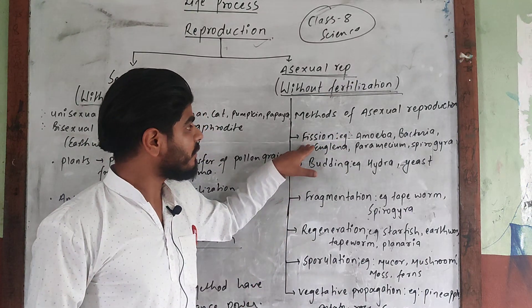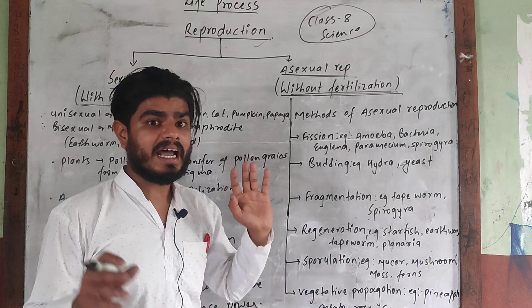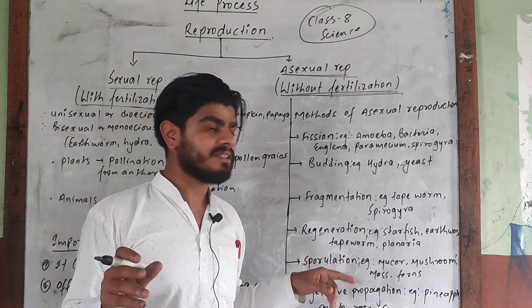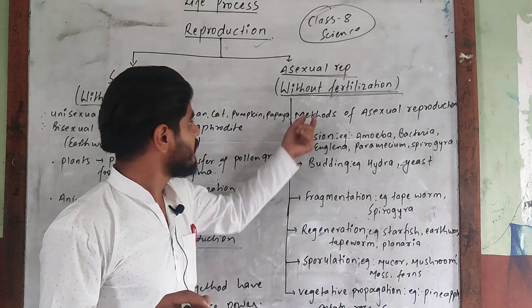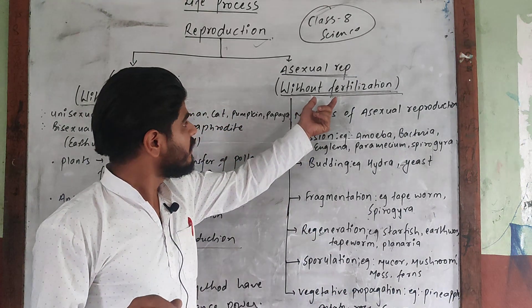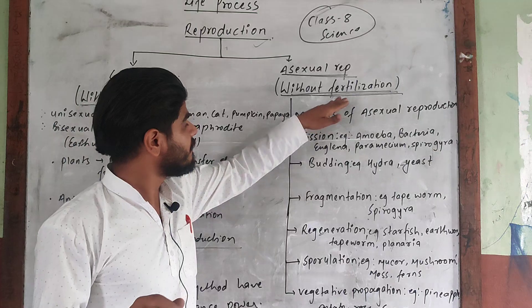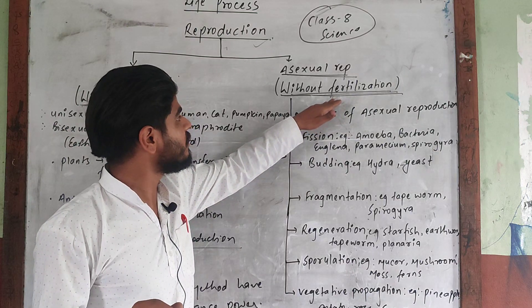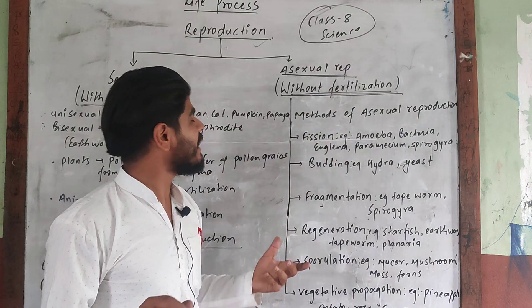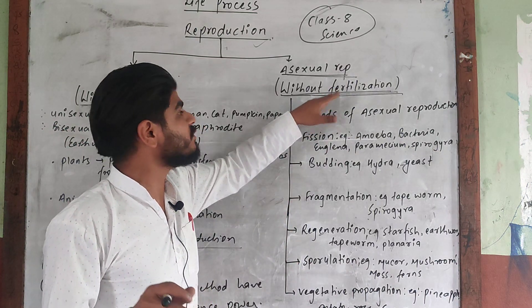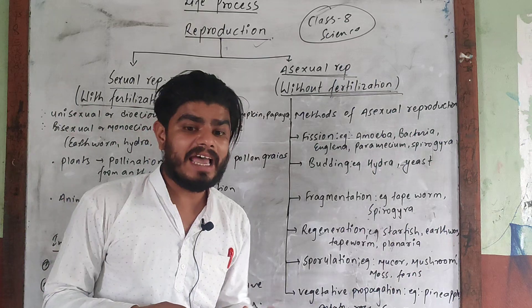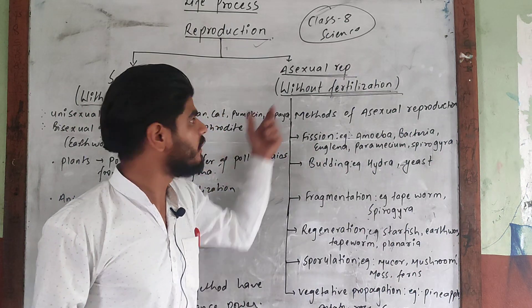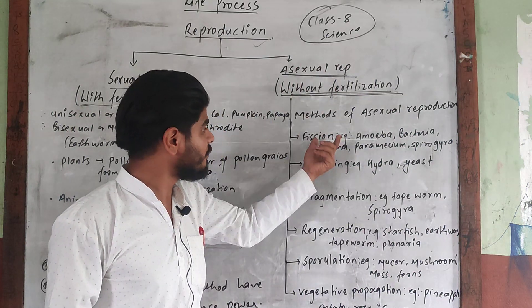Now identify the following organisms — which type of fertilization takes place: asexual or sexual? What is asexual?